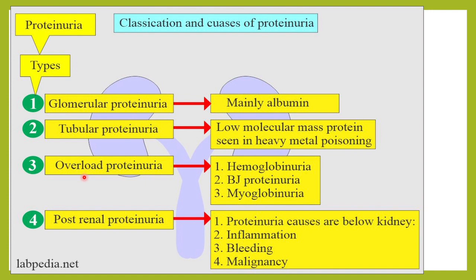Overload proteinuria is because of excess proteins in the serum — the kidney is not able to filter or reabsorb those proteins and that is why they are excreted, which happens in multiple myeloma etc. Post-renal proteinuria is because of any obstruction, stones, or inflammation below the kidney.